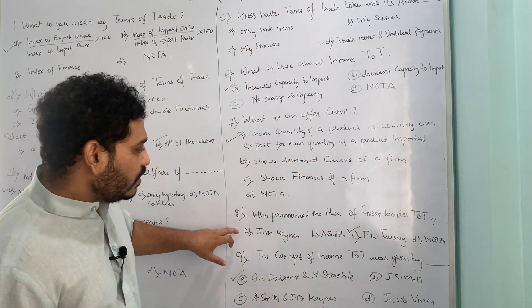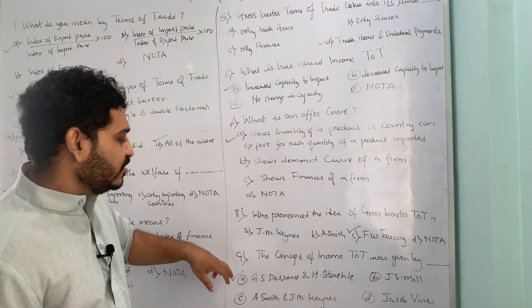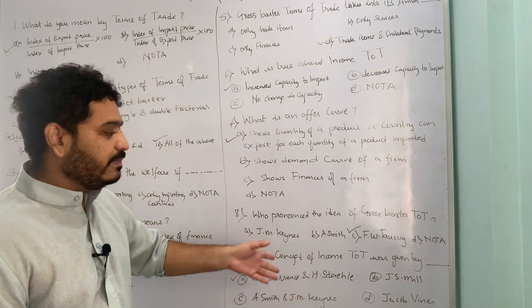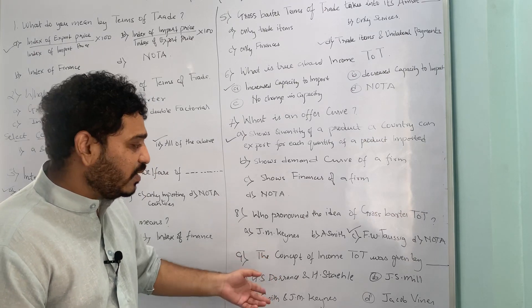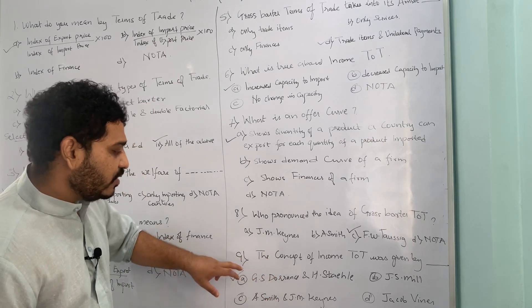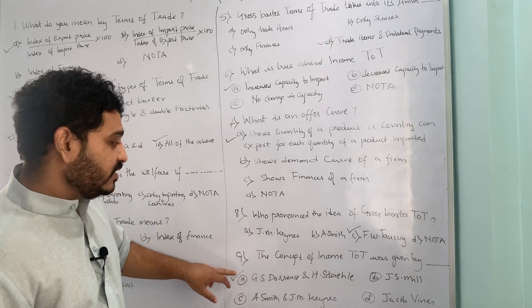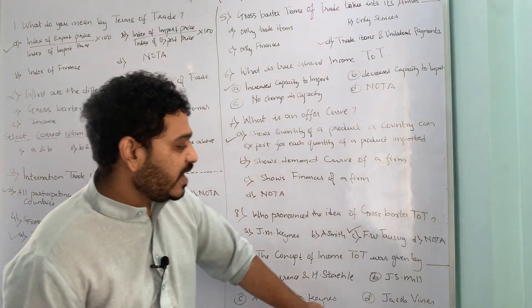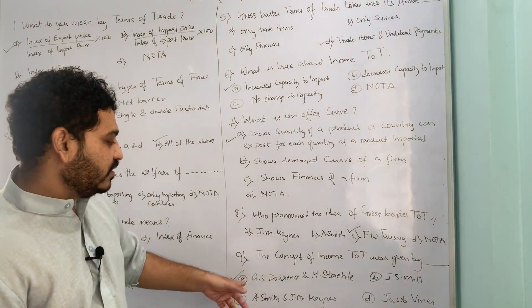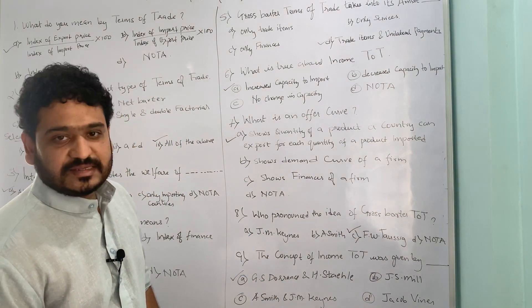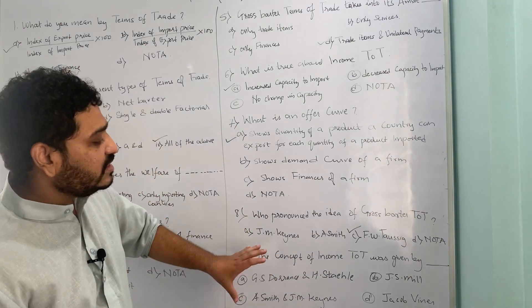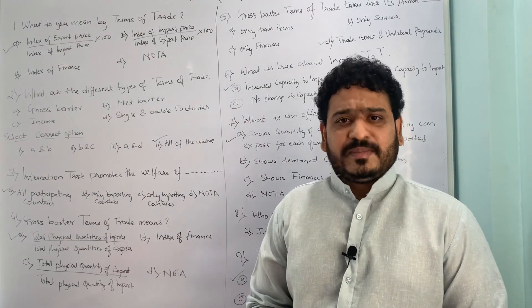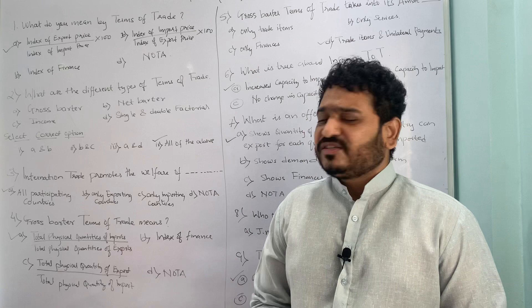The ninth and final question asks: who gave the concept of income terms of trade? The options are: (A) J.S. Dorrance and H. Staehle, (B) J.S. Mill, (C) Adam Smith and John Maynard Keynes, (D) Jacob Viner. The correct answer is A — J.S. Dorrance and H. Staehle. These are the sorts of questions that may appear in your university exams. Please stay tuned, as more such videos will follow in the coming weeks. Thank you.